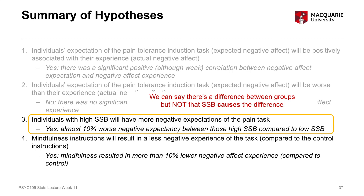It's a non-experimental manipulation — they're naturally occurring groups — and therefore we can't make a causal conclusion between somatic symptom burden and expectations. In fact, it could be differences in expectation that bring about differences in somatic symptom burden, or it could be other variables that affect both somatic symptom burden and expectations. Because these are naturally occurring groups, we can't conclude that somatic symptom burden causes the differences in negative expectancies.